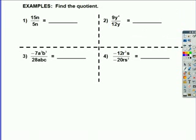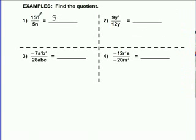Example 1. 15 divided by 5 is 3. n divided by n is 1. They cancel out, so I'm left only with 3.